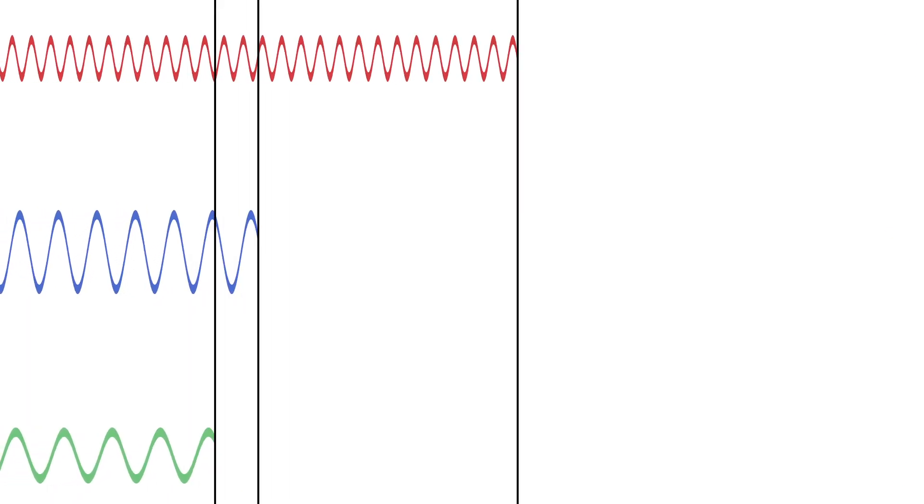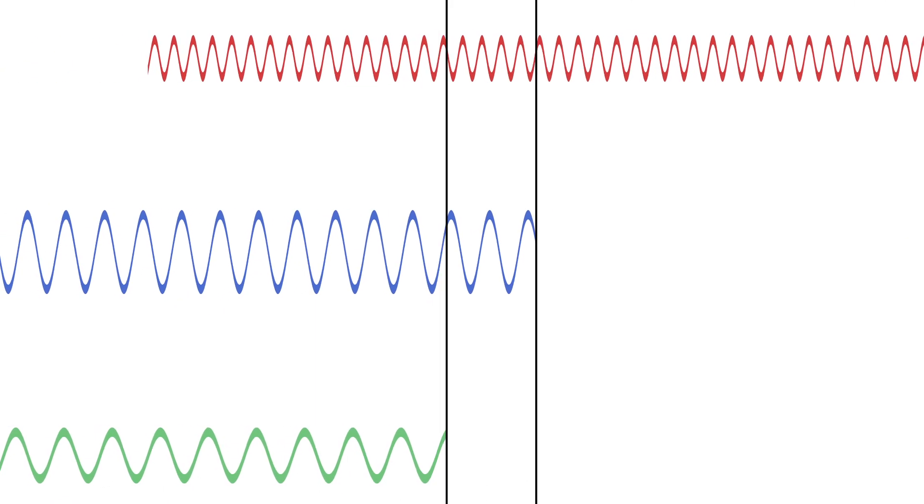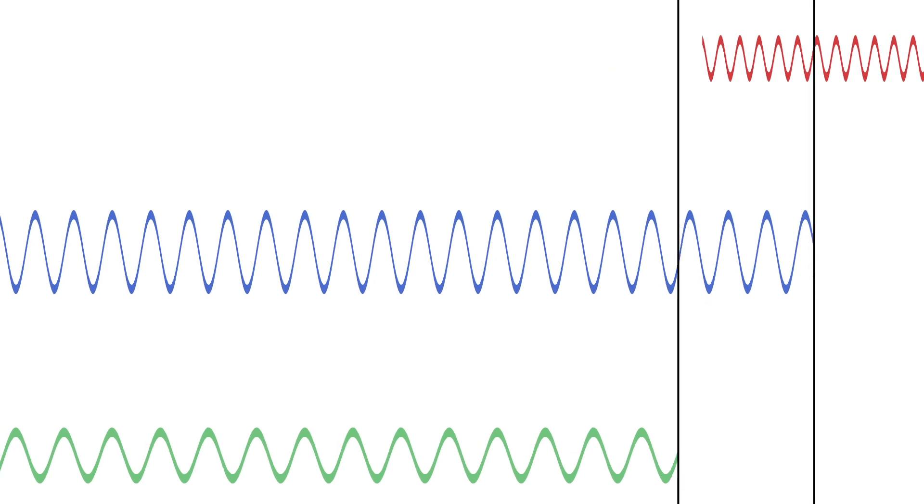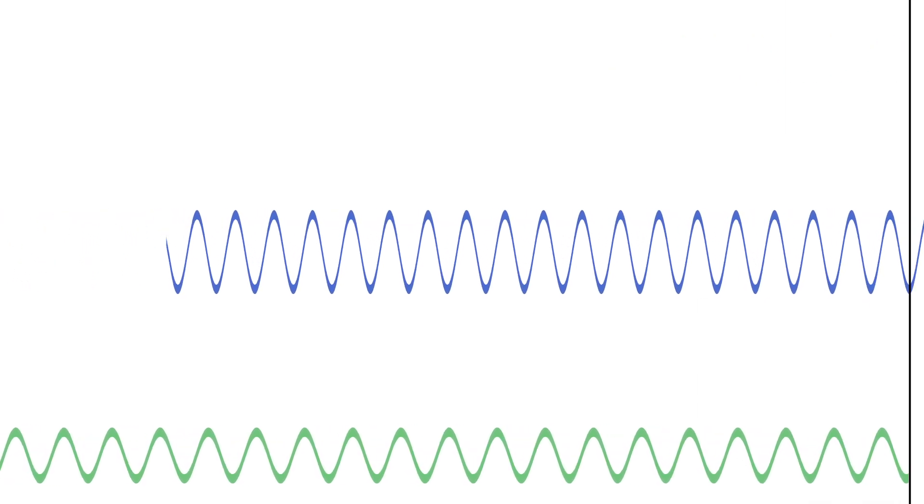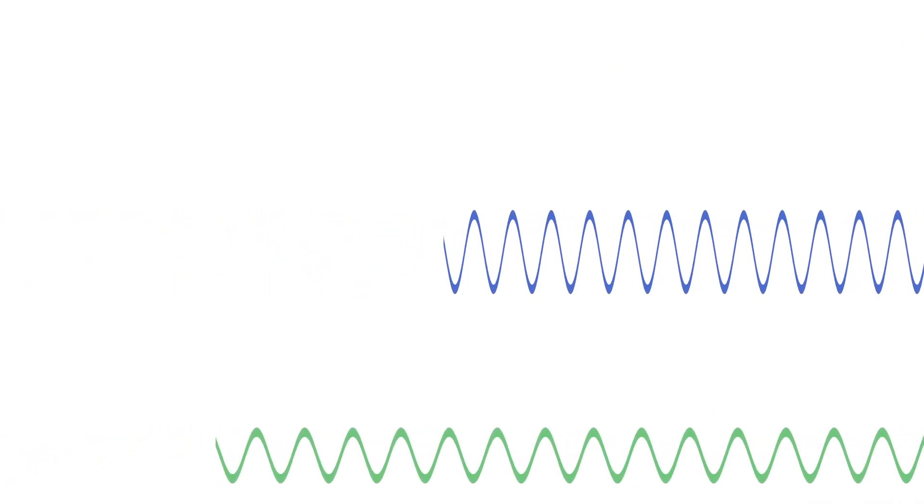Now in the second type, the speed of the wave will depend on the wavelength. This means, for example, that a wave on the surface of water with a wavelength of 1 mm would travel faster than a wave of 2 mm. Such a medium would then be a dispersive medium.